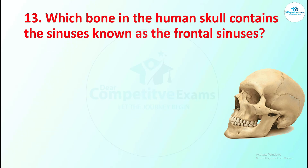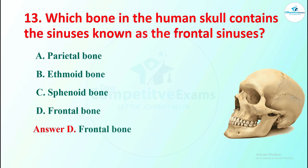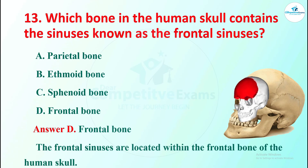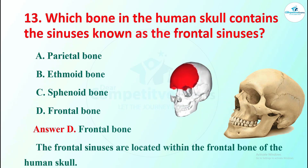Question 13: which bone in the human skull contains the sinuses known as the frontal sinuses? Options are parietal bone, ethmoid bone, sphenoid bone, and frontal bone. The right answer is frontal bone. The frontal sinuses are located within the frontal bone of the human skull.